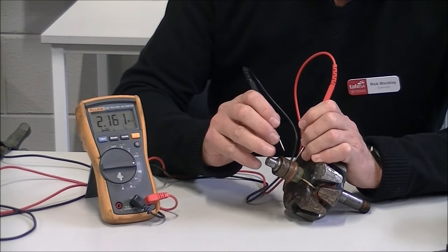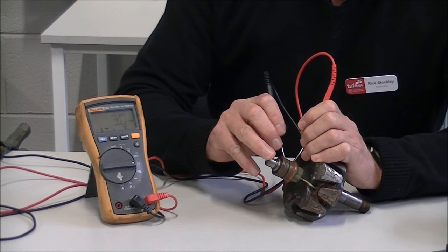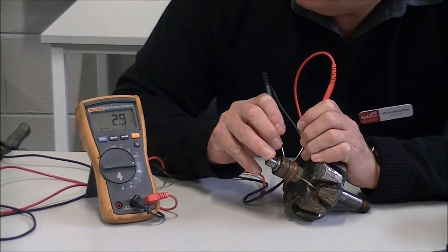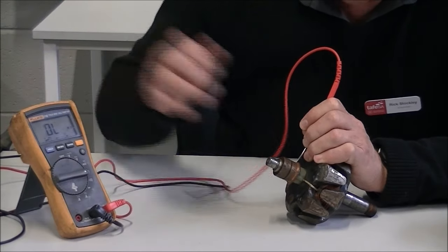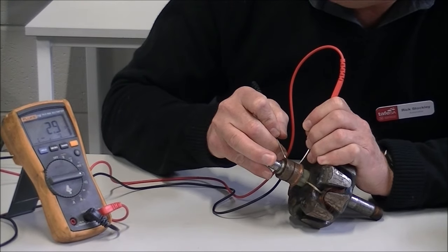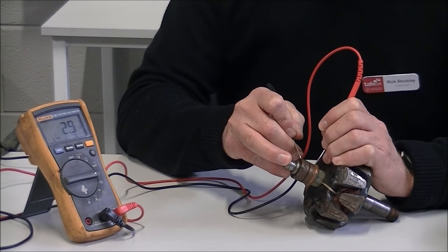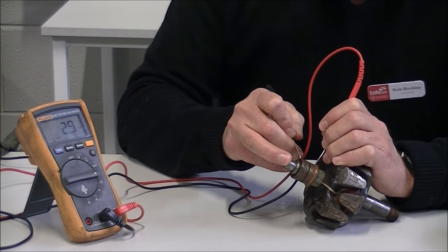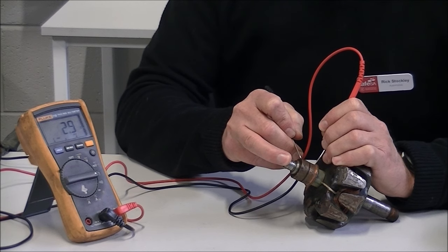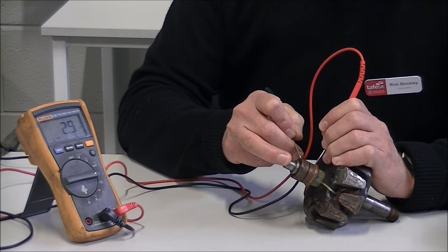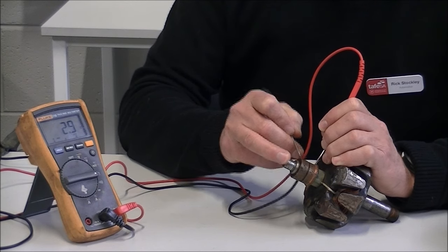So we connect our ohmmeter across our rotor. We should get a reading on our ohmmeter, which we have... 2.9 ohms. So we know it has continuity, we know it's not open circuit, and we know from specifications that that is about the correct resistance. So we have continuity in the coil and the correct resistance.